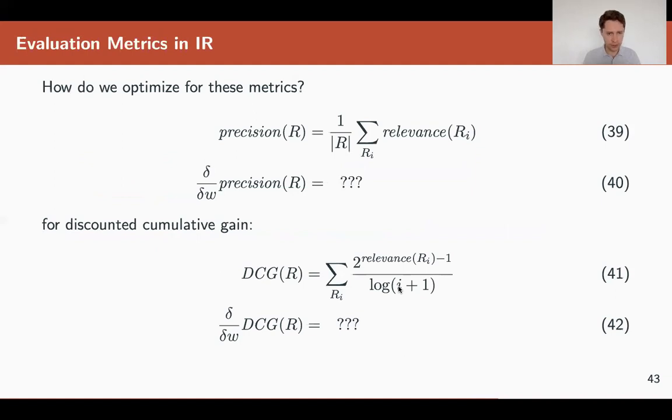Now, how do we optimize these metrics? Well, ideally, we take a derivative with respect to the parameter of the model. We equate the derivative to zero and so on. Or we do gradient descent. However, the problem is that these metrics are non-continuous and non-differentiable. So we can't just do that.